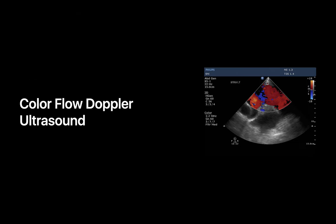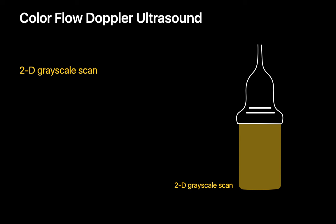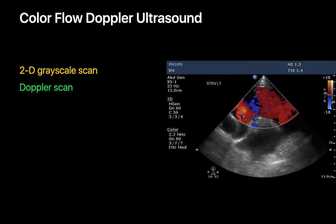Now let's talk about color flow Doppler ultrasound. Color flow Doppler is a nice way to see what the overall blood flow looks like in a large region. It can distinguish flow towards versus away from the transducer, rendering flow direction using a red-blue color spectrum superimposed on the 2D grayscale image. It provides a sense of flow direction, velocity, and whether flow seems turbulent. However, compared to 2D grayscale imaging, the temporal resolution or frame rate of color Doppler is usually noticeably worse, since the transducer must simultaneously create and update both the grayscale and color flow Doppler images.